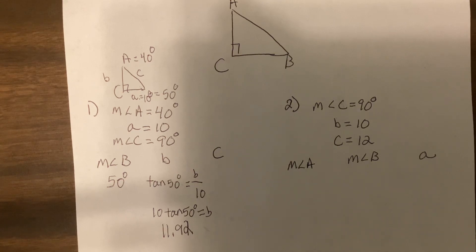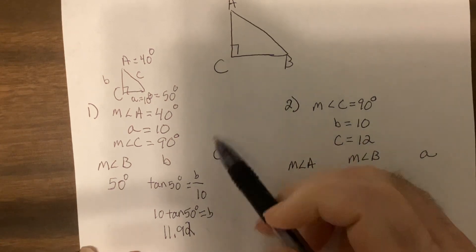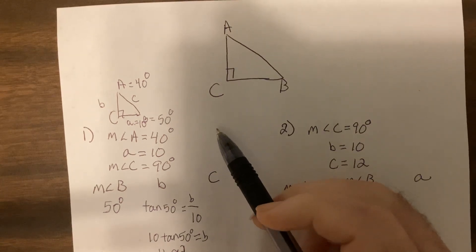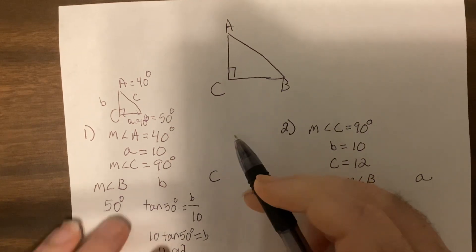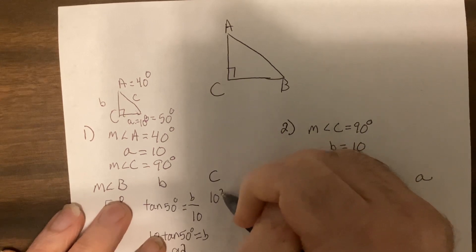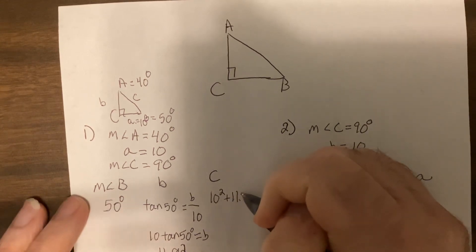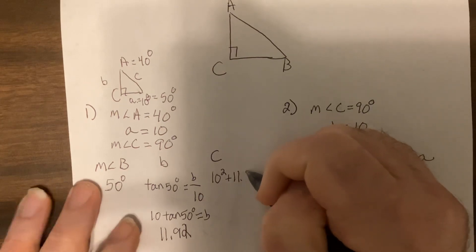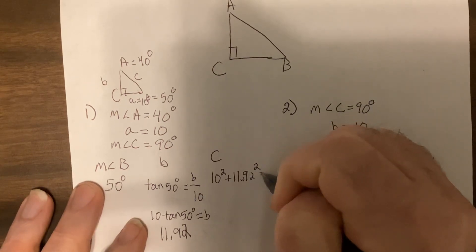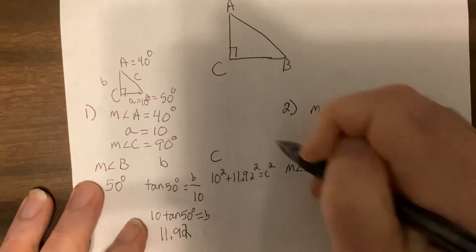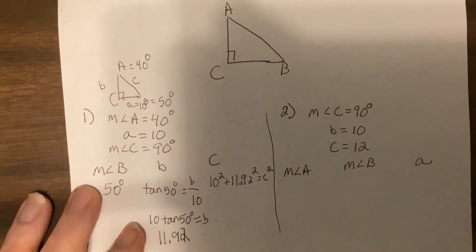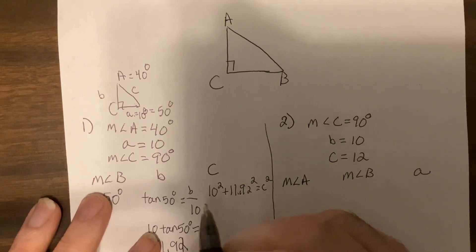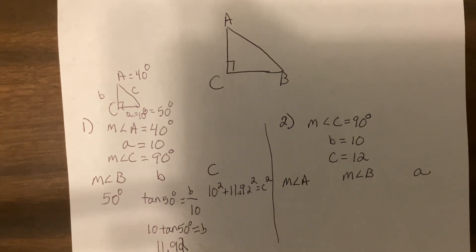Let me clear it. Now we could do Pythagorean theorem, no problem. In fact, I am going to do Pythagorean theorem. 10 squared plus 11.92 squared equals c squared. I'm running into the next problem. 10 squared is 100. 11.92 squared is 142.09 if you round it.